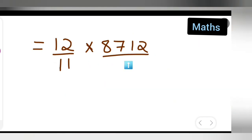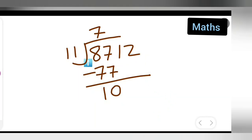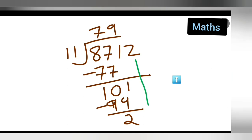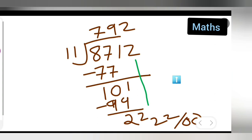Now divide 8712 by 11: 11 × 7 = 77, 87 − 77 = 10; bring down 1 to get 101; 11 × 9 = 99, remainder 2; bring down 2; 11 × 2 = 22, remainder 0. So 8712 ÷ 11 = 792.